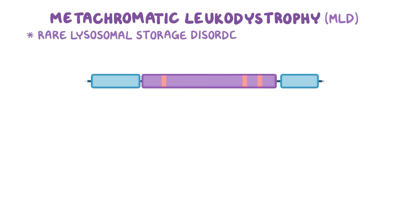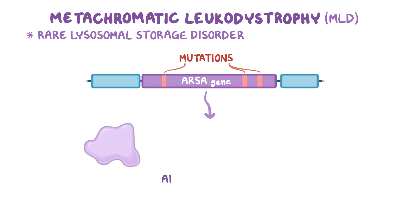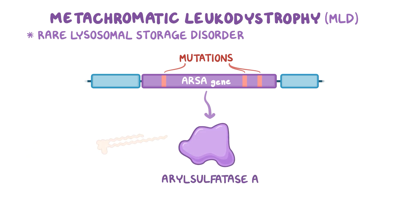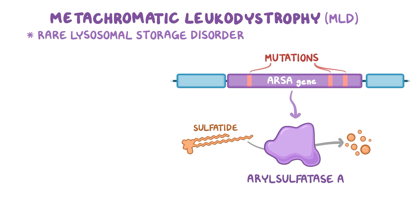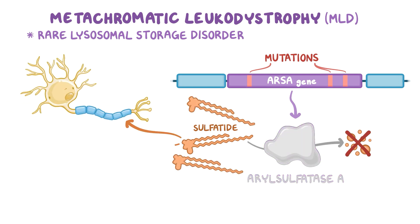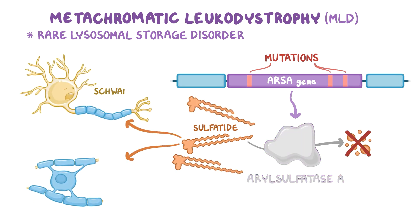Metachromatic leukodystrophy, or MLD, is a rare lysosomal storage disorder that results from mutations in the ARSA gene, which codes for arylsulfatase A, an enzyme that normally breaks down a fat called sulfatide. Without this enzyme, sulfatide accumulates in neurons and myelin-producing cells, like Schwann cells and oligodendrocytes, resulting in their degeneration.